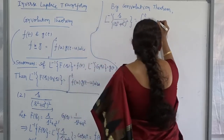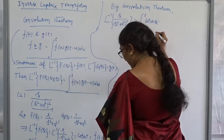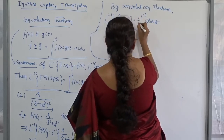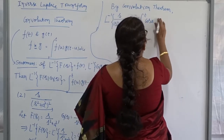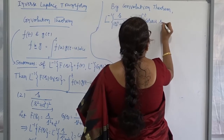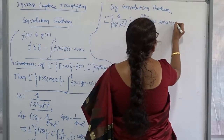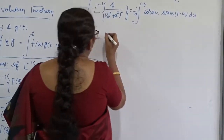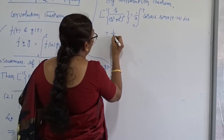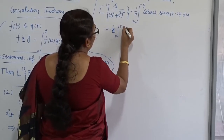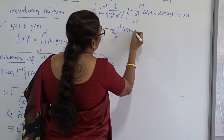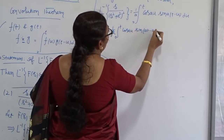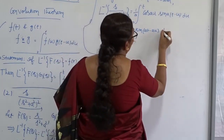What about g(t)? g(t) = (1/a)sin(at). Since 1/a is a constant I take it outside, giving (1/a) times the integral from 0 to t of cos(au) · sin(a(t − u)) du. This can also be written as (1/a) times the integral from 0 to t of cos(au) · sin(at − au) du.